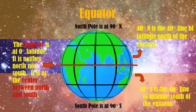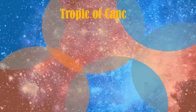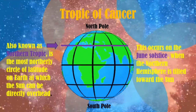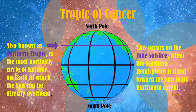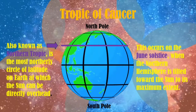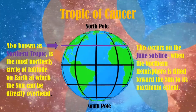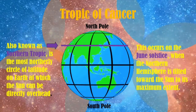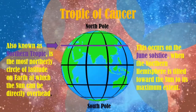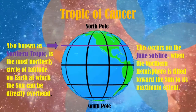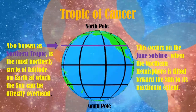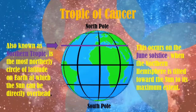Next, we have the Tropic of Cancer, also known as the Northern Tropic. It is the most northerly circle of latitude on earth at which the sun can be directly overhead. This occurs on the June solstice when the northern hemisphere is tilted toward the sun to its maximum extent.